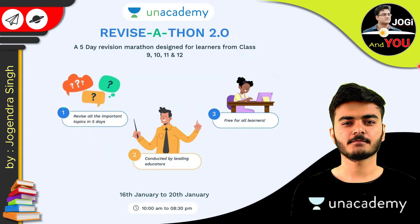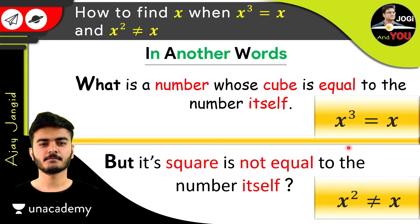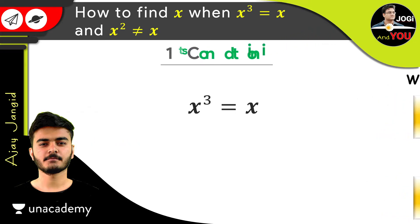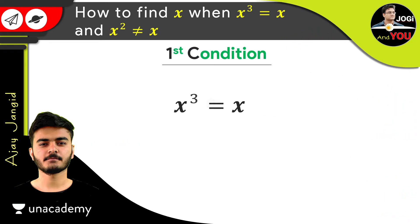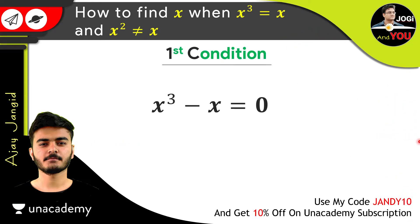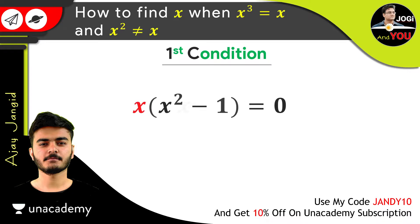Now let's come back to our current question. For solving this, we have two conditions: the first is x cube equals x, and the second is x square is not equal to x. Take the first condition and transfer x to the left side — we get x cube minus x is equal to 0. Take x as a common factor.